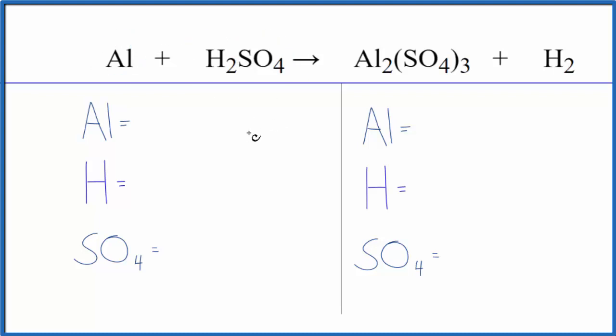So we'll use a bit of a trick to balance this equation to make it a lot easier. But let's count the atoms up. We have one aluminum atom and two hydrogen atoms.